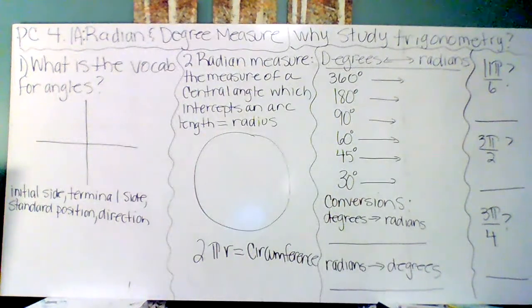And so let's take a look. What is the vocab for angles? So I just have an XY plane here, and we're going to look at the initial side, terminal side, standard position, and direction. So an initial side of an angle is obviously the first side you draw. We do tend to put that on the positive X axis. So this would be the initial side. And then, normally, you naturally, when you make an angle, rotate upwards. It's just your natural state.